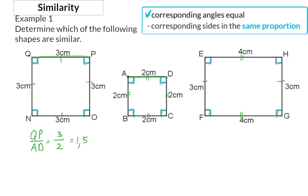If we next have a look at QN over AB, you will see that this is also a ratio of 3 over 2 or 1.5. And the same goes for side NO and BC and side PO and DC.